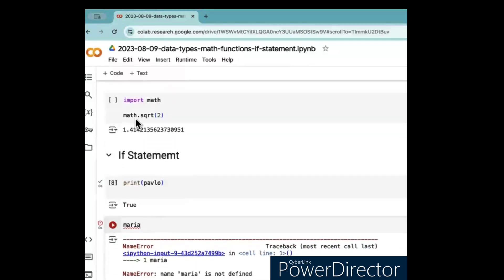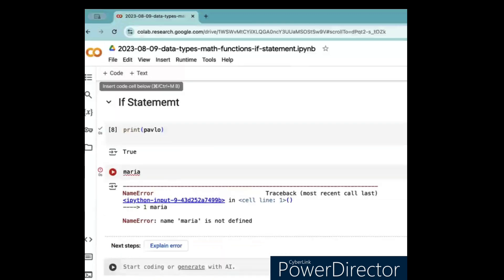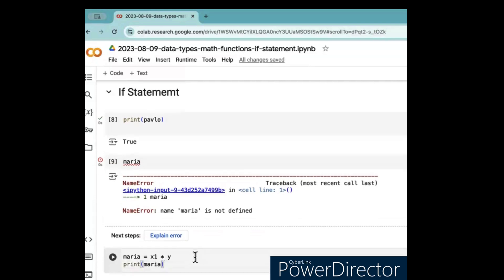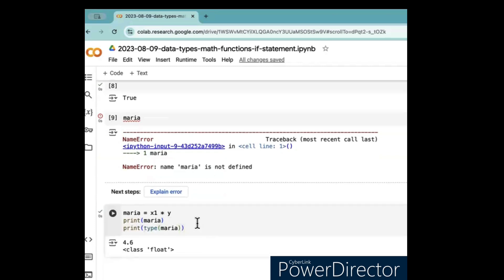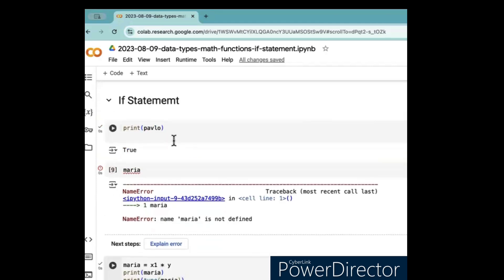No, if we can fix it like this, we would say, we would say Maria equals, we could say, look, we could say Maria equals x1 times y, right? Print Maria. Let's print Maria. Then let's say, print the type of Maria. Okay, it's a float. Maria is a float.